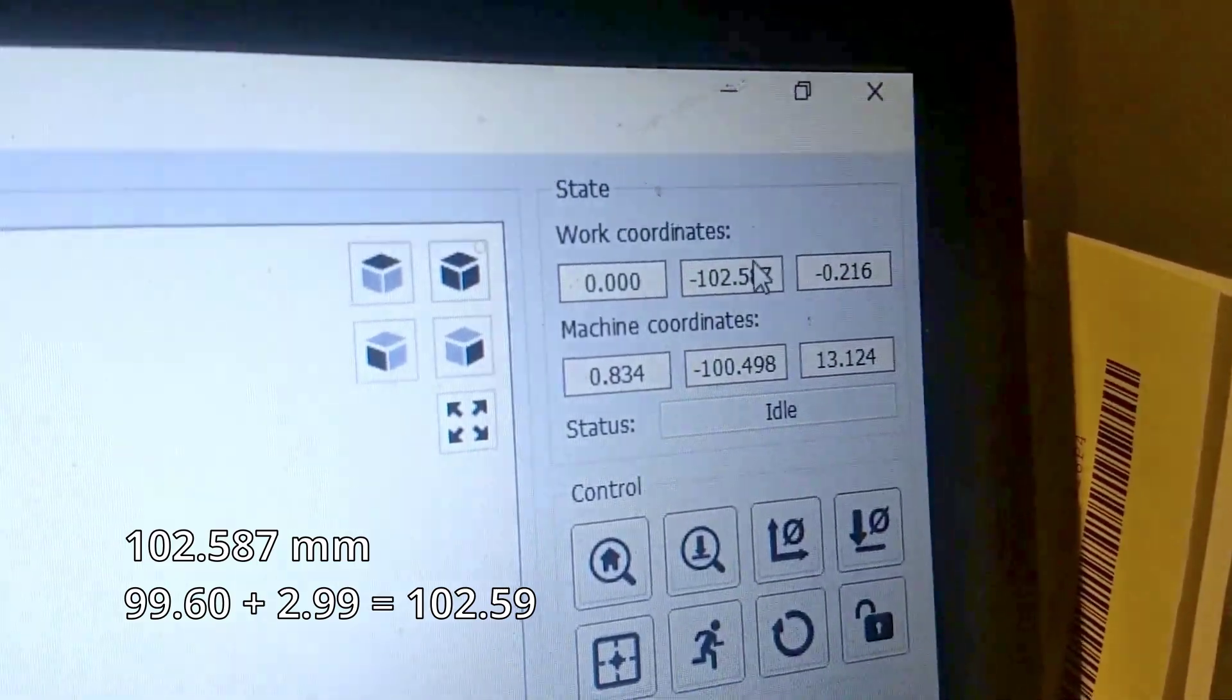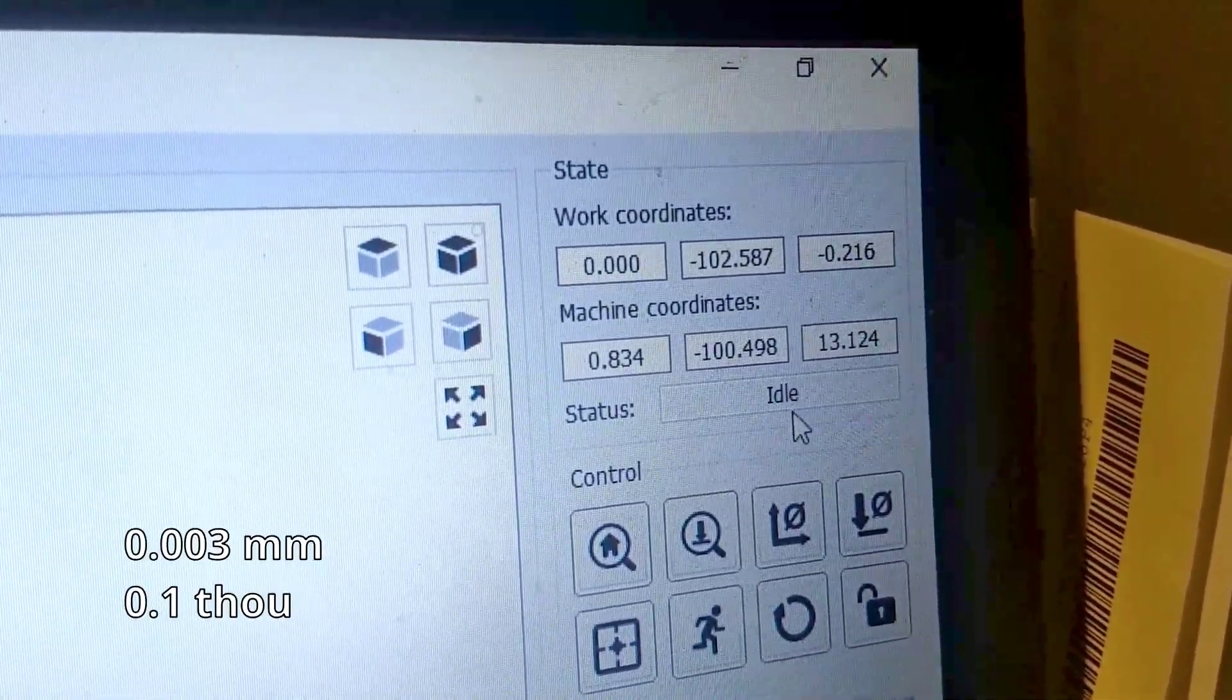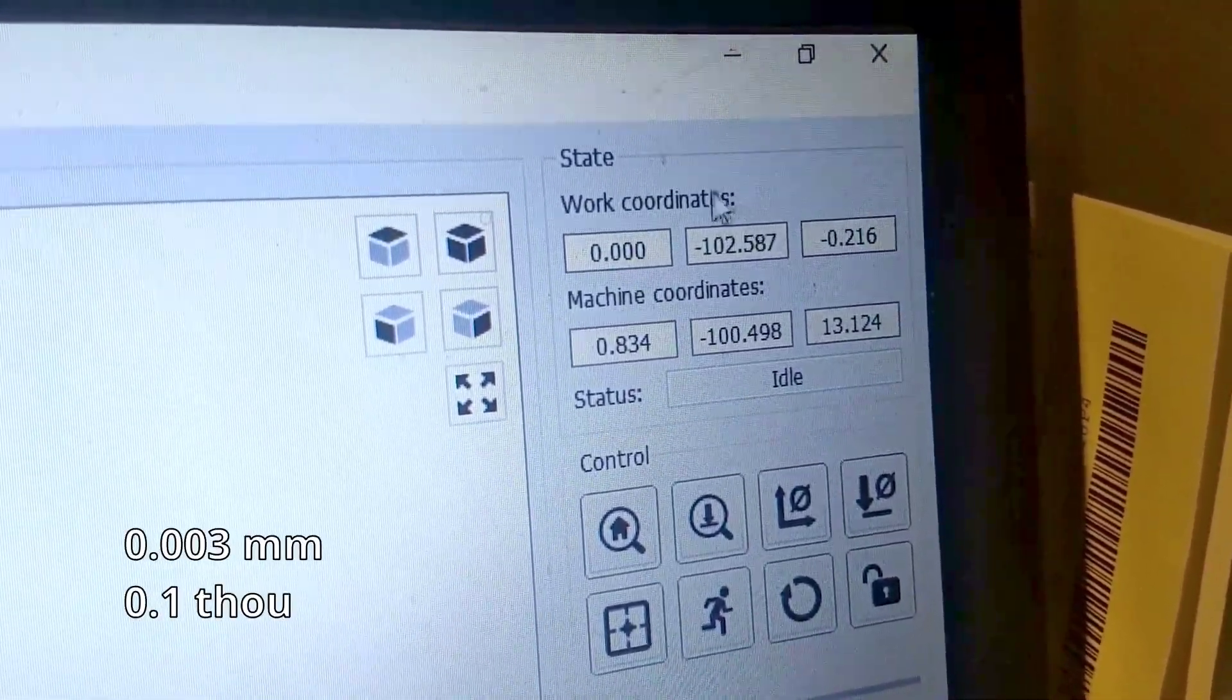102.587 means we have an error of only three thousandths of a millimeter, or 0.1 thou, which is certainly a small error.